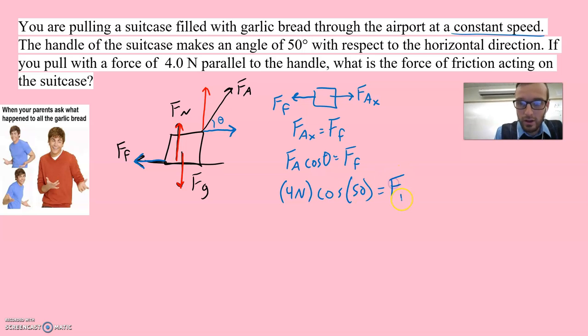And so the only thing that we need to pay attention here is that the force of friction is horizontal, and that's going to be balanced with the horizontal component of the applied force. And so because they give us so much beautiful information, all I have to do is make sure my calculator is in degree mode, and I would do 4 cosine 30, and that would get me a force of friction of 3.46 newtons.